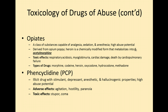Opiates are a class capable of analgesia, sedation, and anesthesia. They are derived from the opium poppy. Heroin is a chemically modified form that turns into 6-acetylmorphine. Toxic effects include respiratory acidosis, myoglobin in the urine, cardiac damage, and cardiopulmonary failure. There are many different drugs in this classification: morphine, codeine, heroin, oxycodone (sometimes called OxyContin), hydrocodone, and methadone.